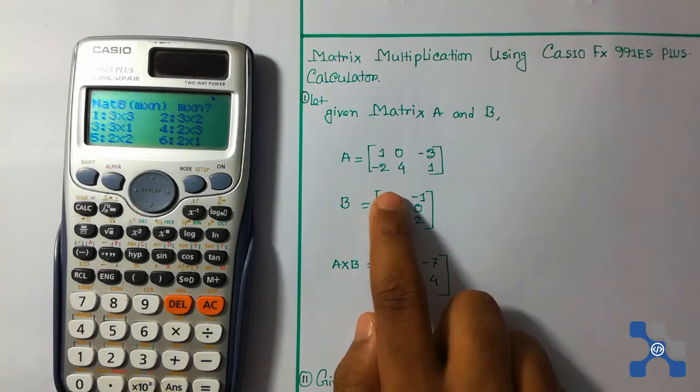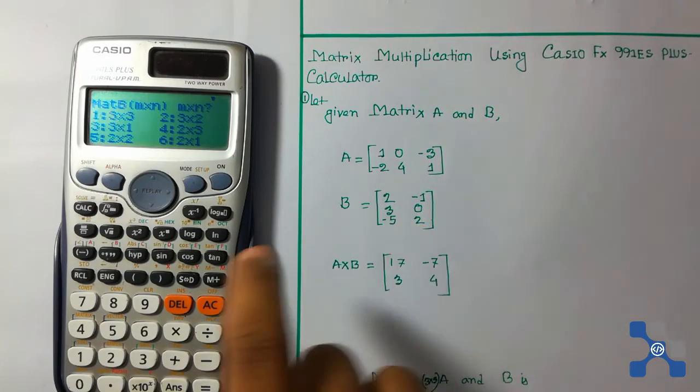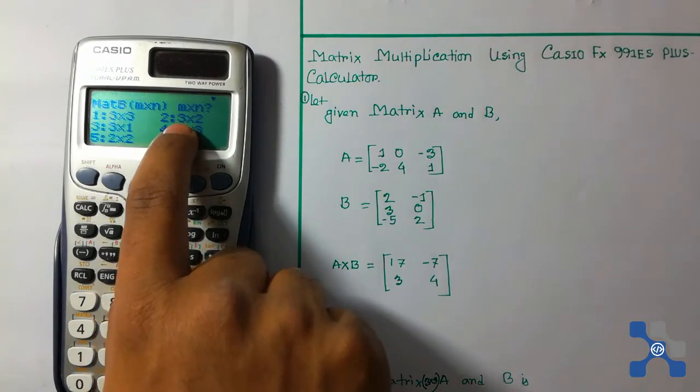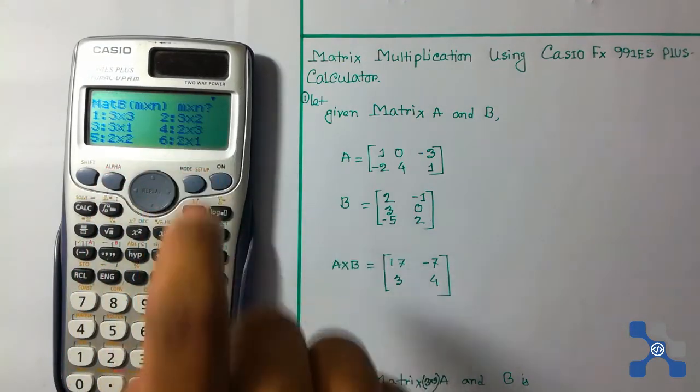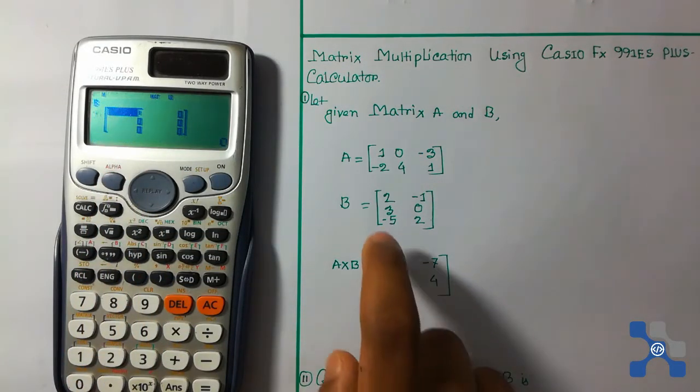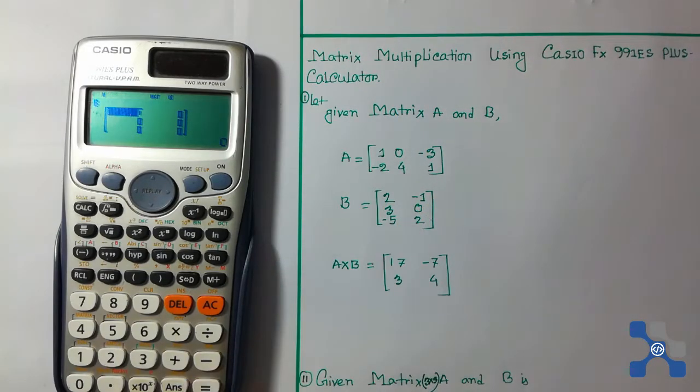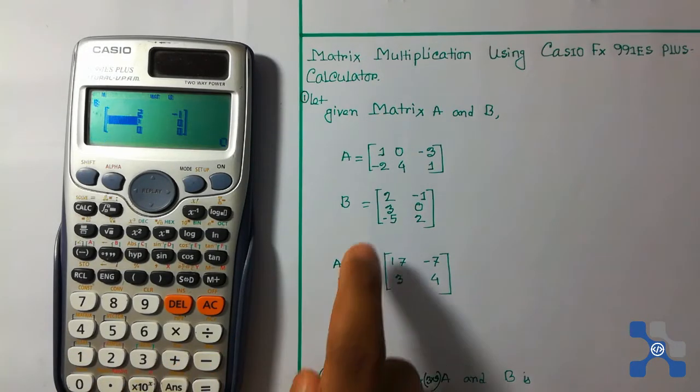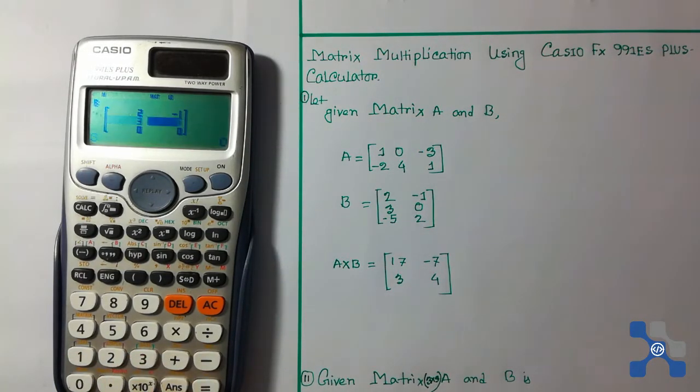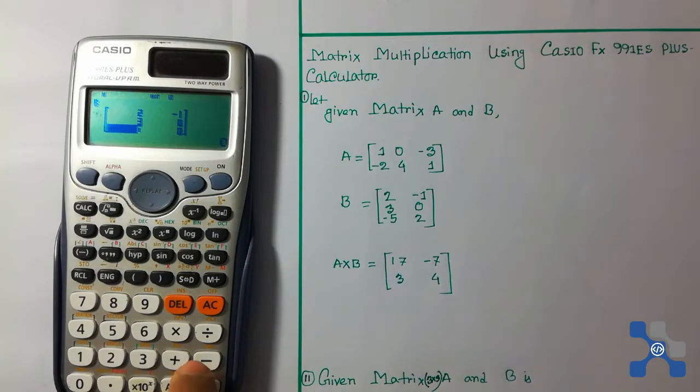The given matrix is 3x2, so we need to select 3x2. Press 2 for 3x2. The first row is 2, -1. The second row is 3, 0. The third row is -5, 2.